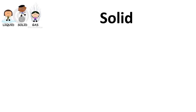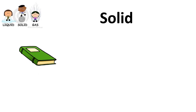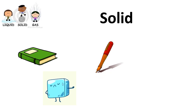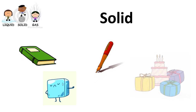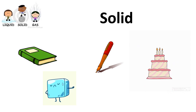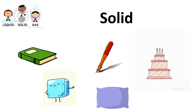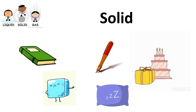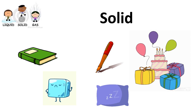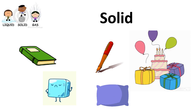Let's start with solid. We have many things that are solid — like the book, the pen, the cake and the gifts that come with the cake, and the pillow. These are all matters that come in a solid state.